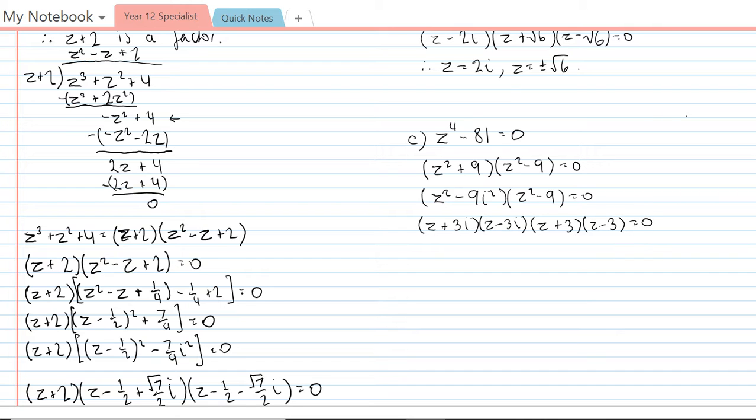And so again, using the null factor law here, we can say that z equals plus or minus 3i. And z also equals plus or minus 3. And those are the solutions.